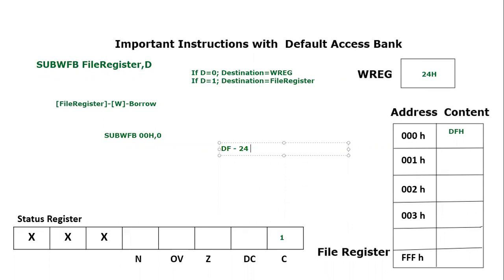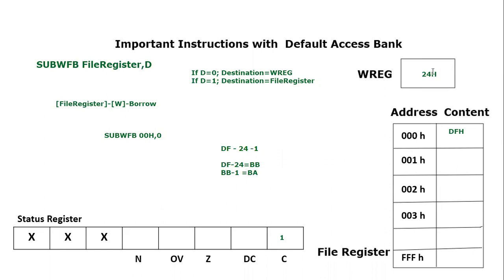Continuing: D minus 2 equals B, so the result of DF minus 24 is BB. Then subtracting the borrow of 1: BB minus 1 equals BA. The result BA hex goes to the destination which is the working register, so the working register content becomes BA hex.